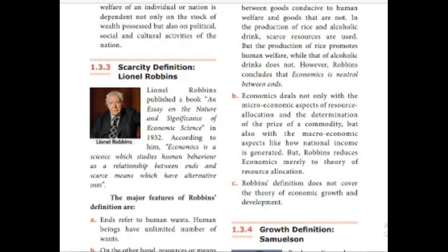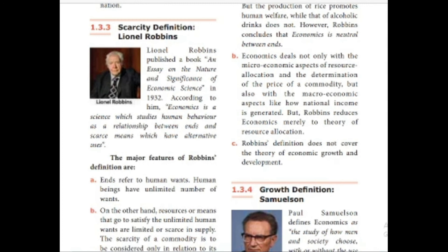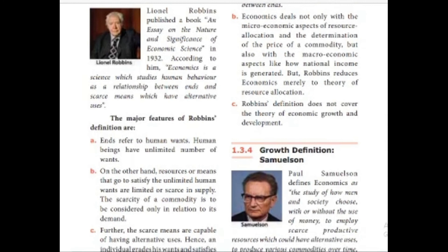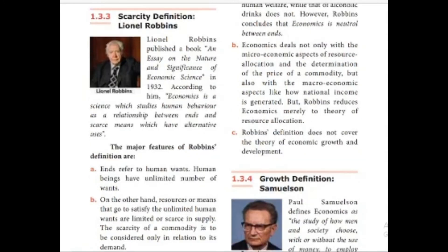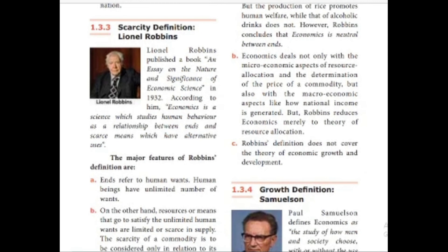Economics deals not only with the microeconomic aspect of resource allocation and the determination of the price of a commodity, but also with macroeconomic aspects like how national income is generated. But Robbins reduces economics merely to a theory of resource allocation. Further, Robbins' definition does not cover the theory of economic growth and development. The scarcity definition will be in a three- or five-mark question.